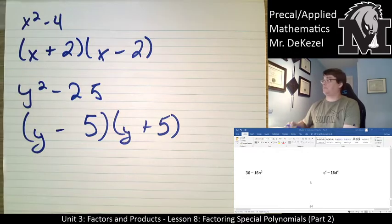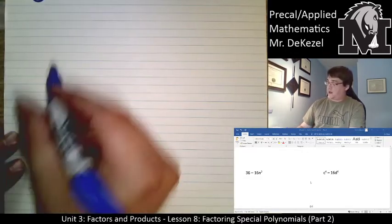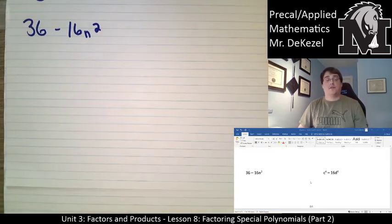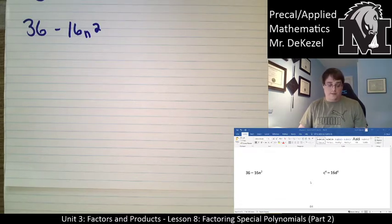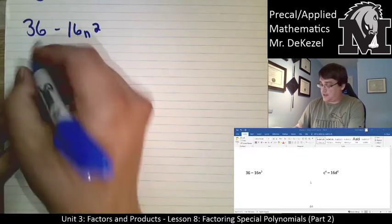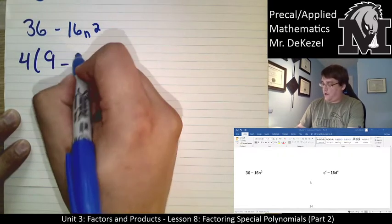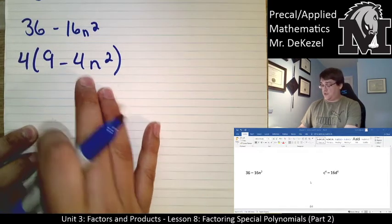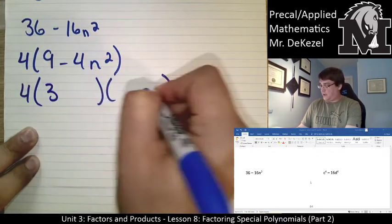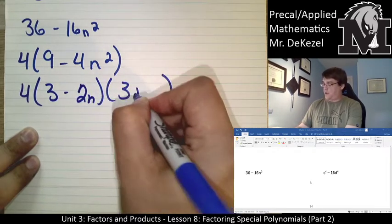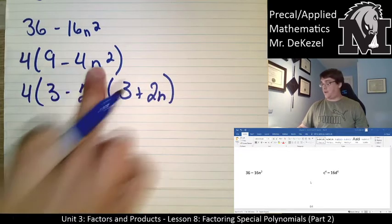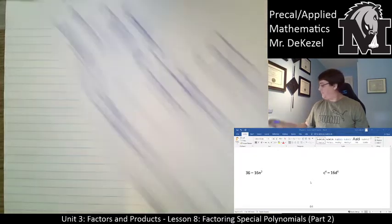Next we have 36 minus 16n squared. The first thing I see is that the greatest common factor is not 1 — it's actually 4. Dividing 4 into 36 gives us 9, and we also get 4n squared. So we factor out 4, giving us 4(9 minus 4n squared). Now I see a difference of squares inside: that factors as 4(3 + 2n)(3 - 2n). Whenever you have perfect squares like this, you can break it into a positive and negative version.